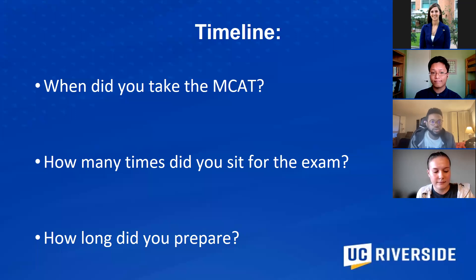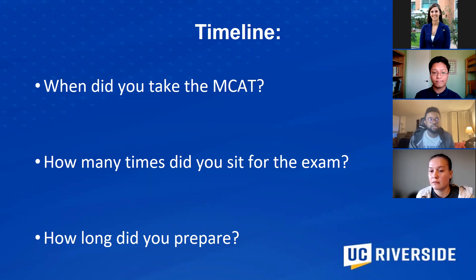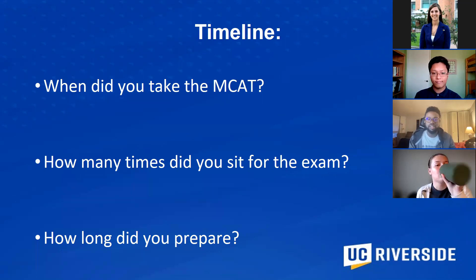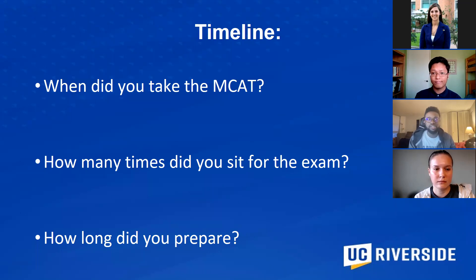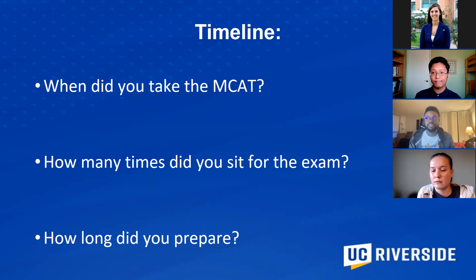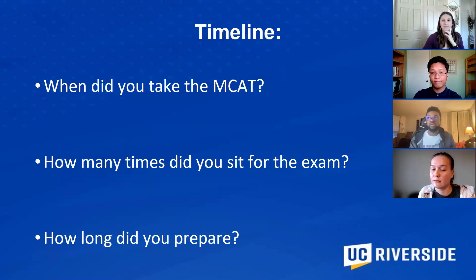The third panelist, OG, agreed that balancing classes with MCAT studying is challenging. He took the exam twice — first after his sophomore year after about two months of studying, but didn't get the score he wanted. He retook it during winter break of his junior year after one more month of studying, for a total of roughly three months of preparation across both attempts, aiming to have a score ready to apply by the end of junior year.